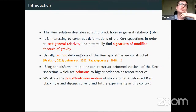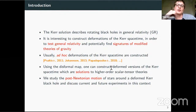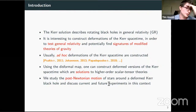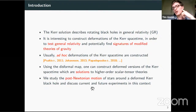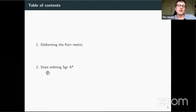In the ad hoc approach, you don't know the underlying theory of your solution. What we propose instead is using the disformal map to actually construct deformed versions of the Kerr spacetime, which are solutions to higher-order scalar-tensor theories. In the second half of the talk, I'll briefly describe the post-Newtonian motion of stars around such a deformed Kerr black hole, and discuss the link with current and future experiments regarding the galactic center.